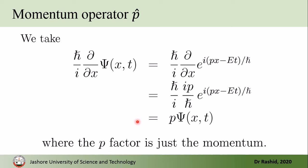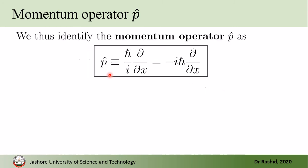We see that we got the momentum when we act this operator on the wave function ψ. So we identify the momentum operator p̂ as (ℏ/i)(∂/∂x). It can also be written as −iℏ(d/dx).